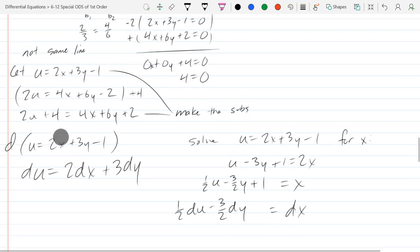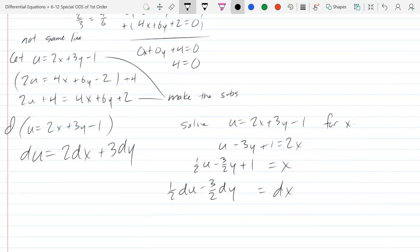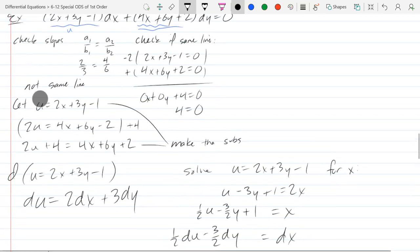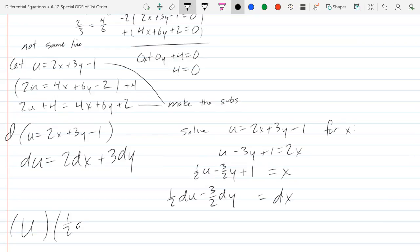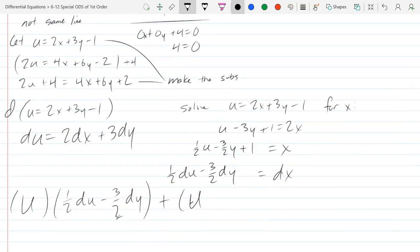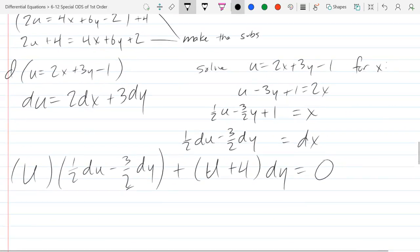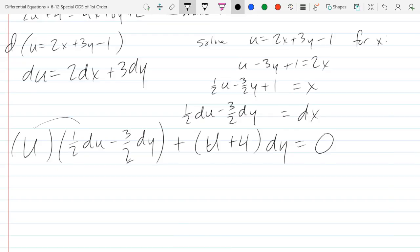So dx is 1 half du minus 3 halves dy. So what we're going to do now is make our substitution. So our original we have u. So the first part turned into u, dx is now changed to 1 half du minus 3 halves dy plus 2u plus 4 dy. And we distribute over here, 1 half u du minus 3 halves u dy plus 2u plus 4 dy equals 0.